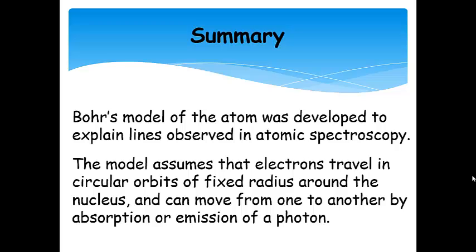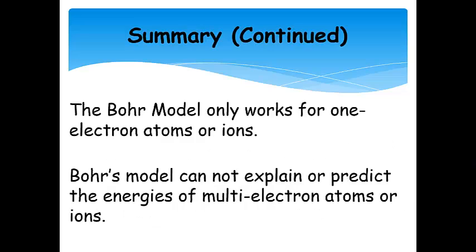Bohr's model of the atom was developed to explain lines observed in atomic spectroscopy, in particular for the hydrogen atom. It assumes that electrons travel in circular orbits of fixed radius around the nucleus and that they can move from one to another by absorption or emission of a photon. The Bohr model only works for one-electron atoms or ions. When written for hydrogen, it is the same as the Rydberg equation, and it cannot be used for multi-electron atoms or ions at all.